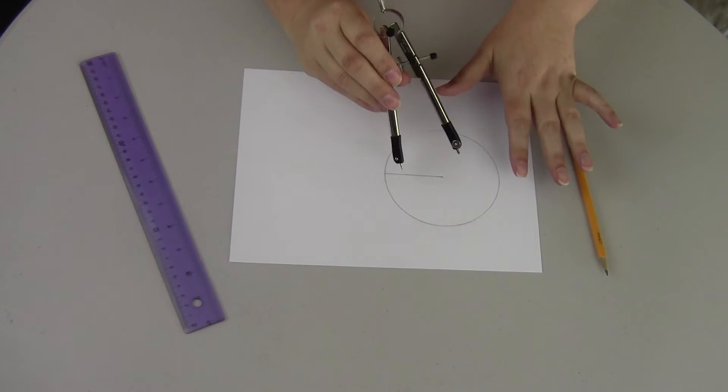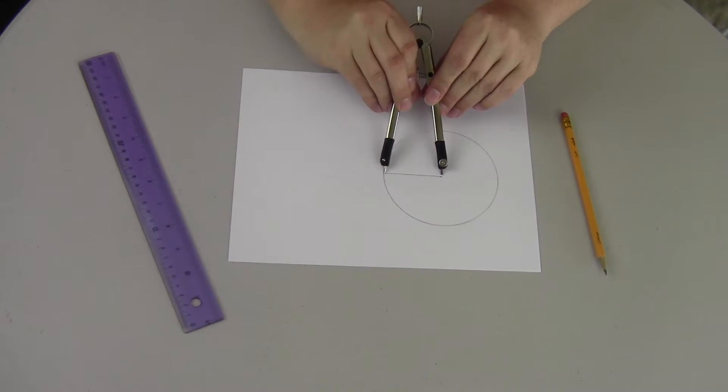Here we're going to do the same size circle, so make sure it's the same size as your first circle. It fulfills the radius of that.